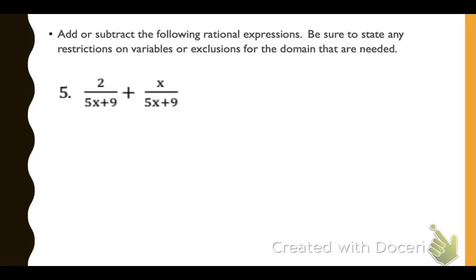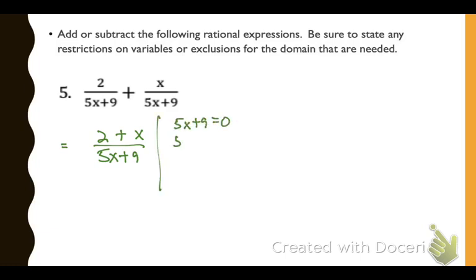Number 5: we're adding. We notice the denominators are already common, so we combine the numerators over one common denominator to get 2 plus x all over 5x plus 9. To find the domain restriction, we set the denominator equal to 0 and solve, giving us x cannot equal negative 9 fifths.